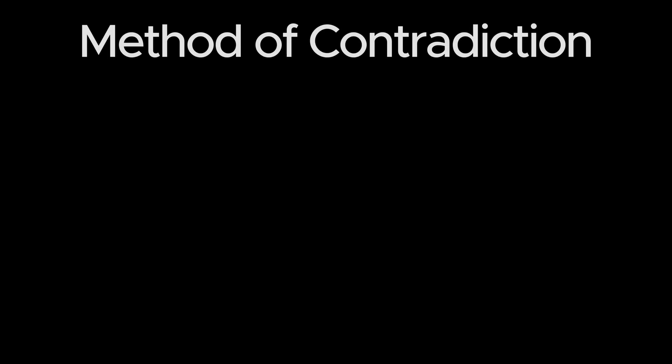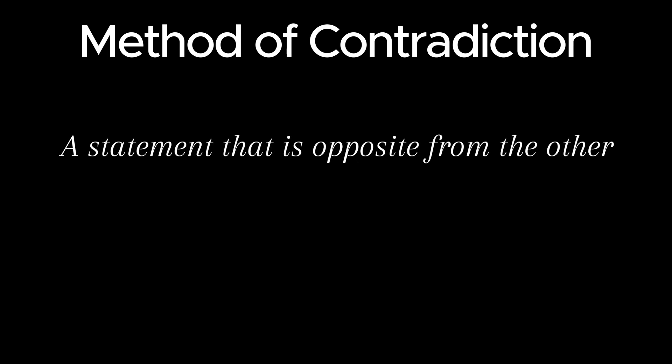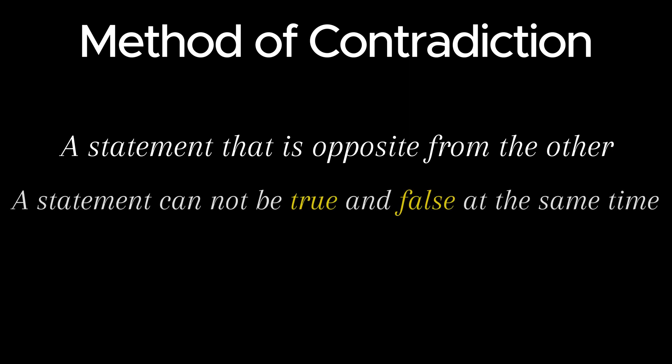In this video we will understand the method of contradiction to prove irrational numbers. The word contradiction means a statement that is opposite from another. In mathematical reasoning, the method of contradiction is a way of proving which is based on the fact that a statement can only be true or false — it can't be both true and false at once. The idea is to prove a statement is true by showing it can't be false.